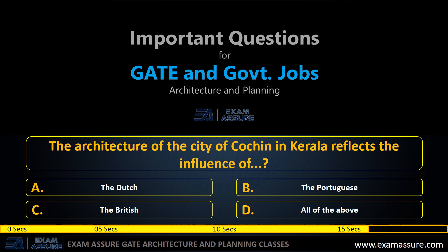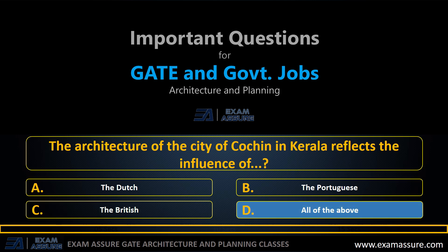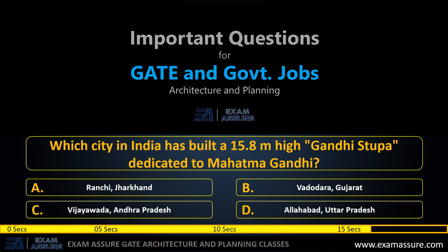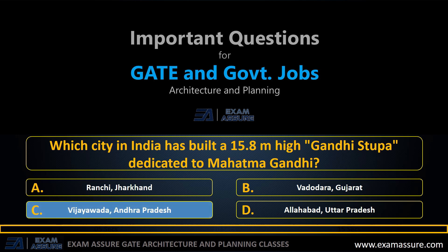Next question: which city in India has built a 15.8-meter height Gandhi Stupa dedicated to Mahatma Gandhi? Option A: Ranchi, Jharkhand, option B: Vadodara, Gujarat, option C: Vijayawada, Andhra Pradesh, option D: Allahabad, Uttar Pradesh. The correct answer is Vijayawada, Andhra Pradesh.